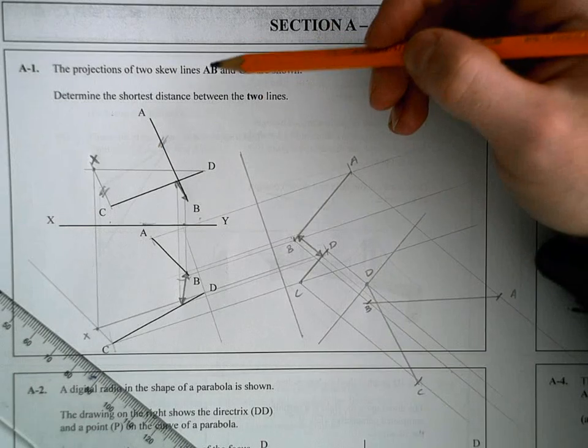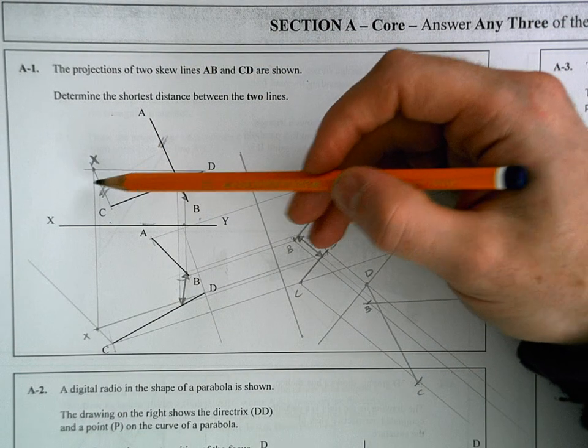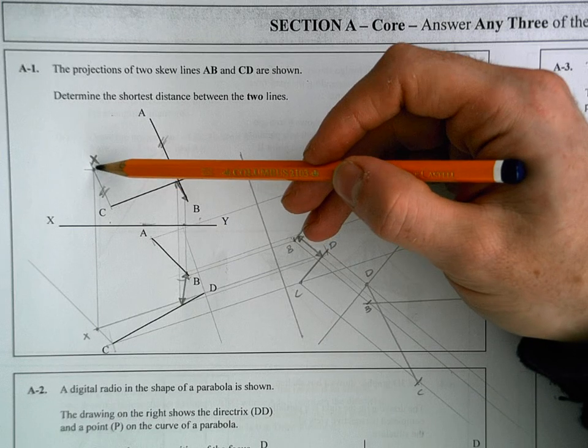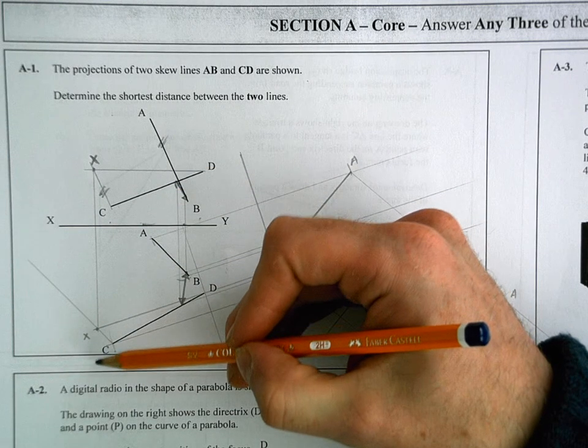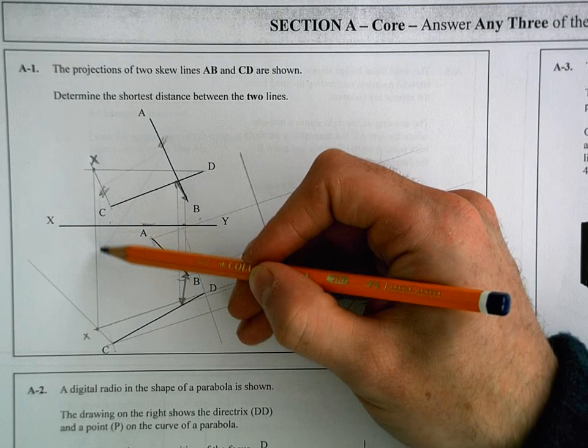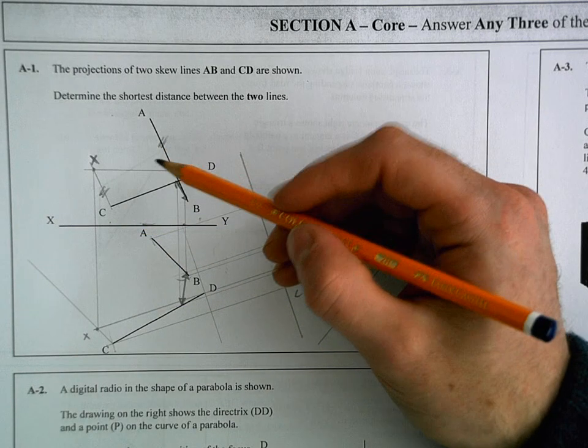Now we have to find point X in our plan view. What I did was I dropped it down to plan view straight down, and it's going to have to be somewhere along this line as we come down. We don't know the exact location of it yet.